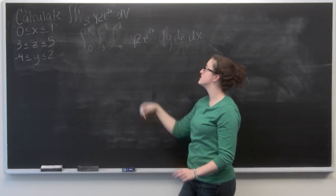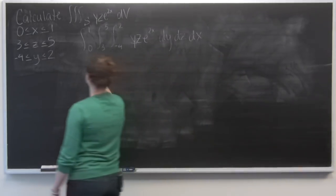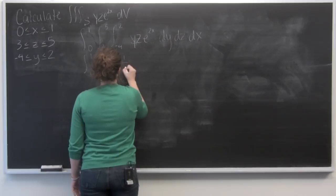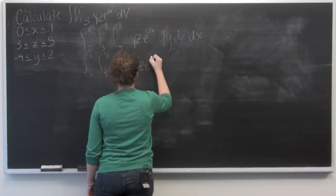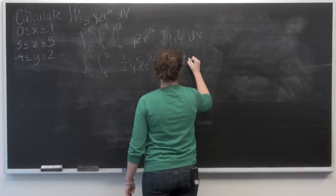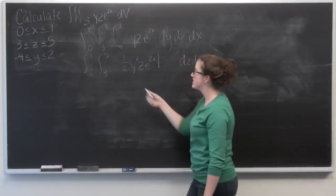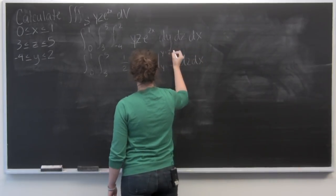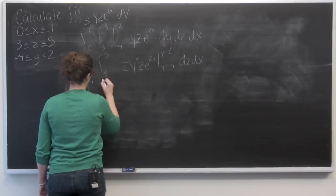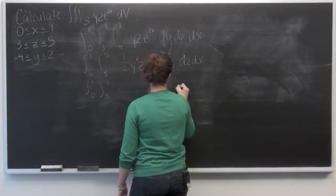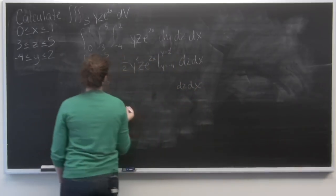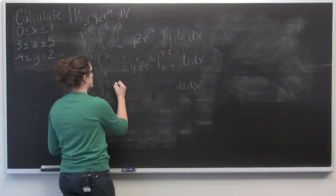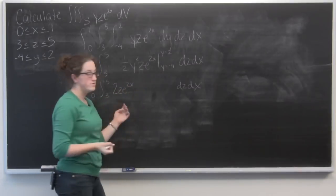So the integral is going to be 1 half y squared times z, times z to the 2x, because we're just treating them as constants. Then we're evaluating from y equals negative 4 to y equals 2. So first I want to plug in 2 where I see y. 2 squared is 4 over 2. So 2z e to the 2x.